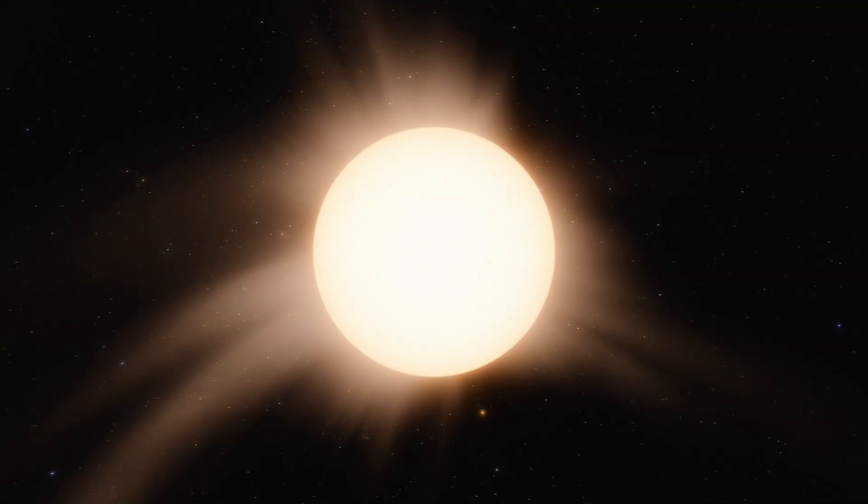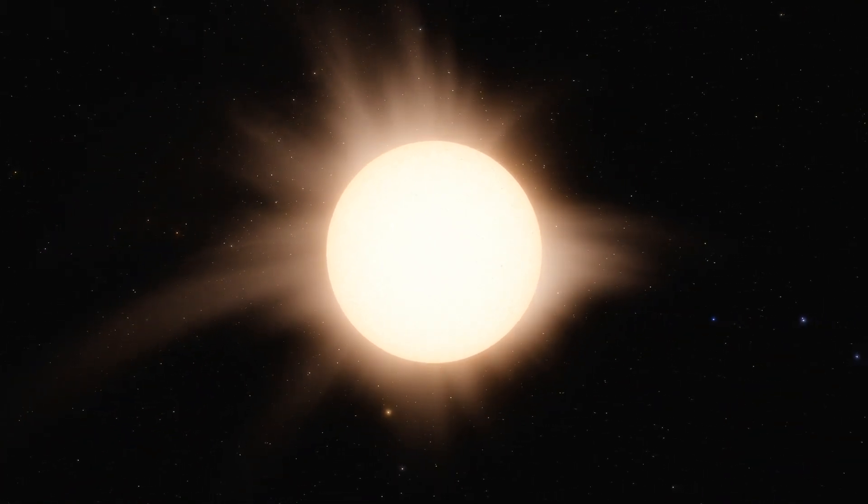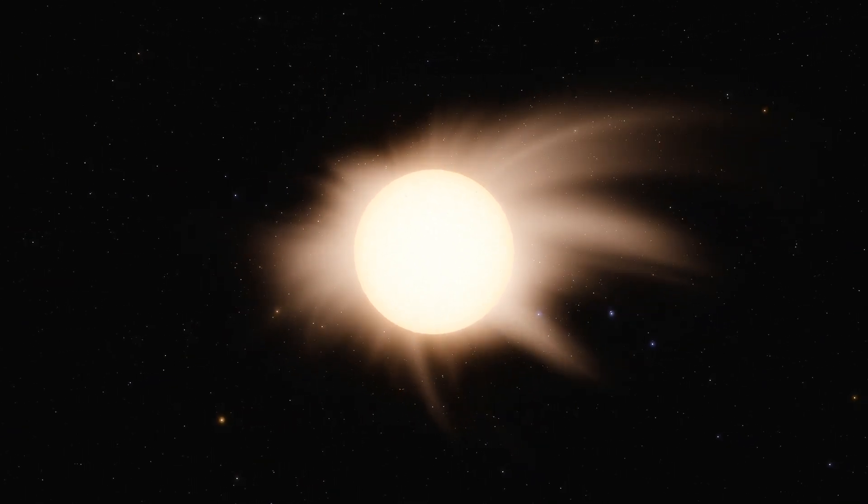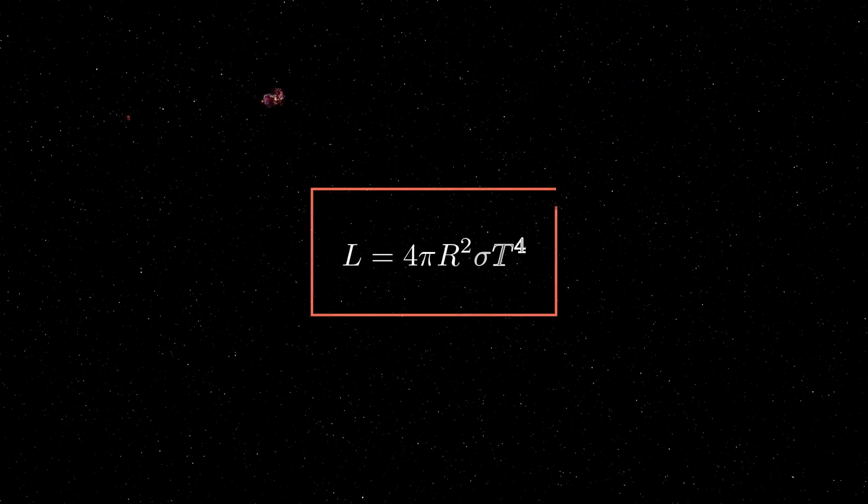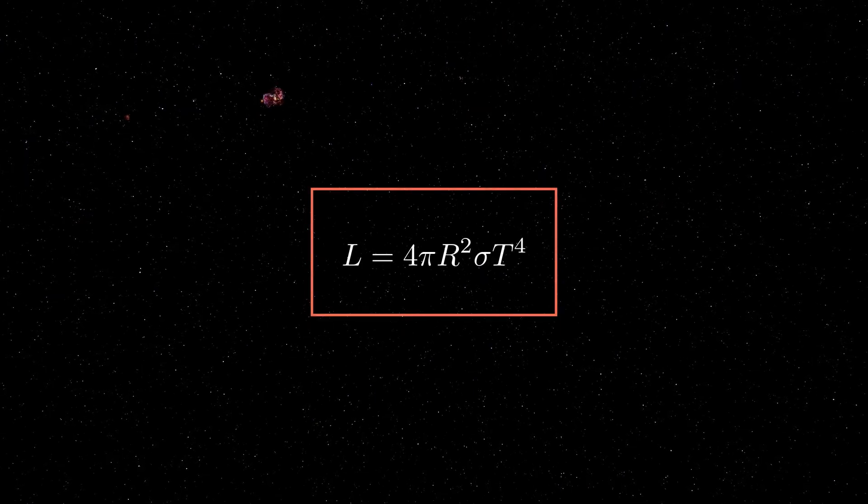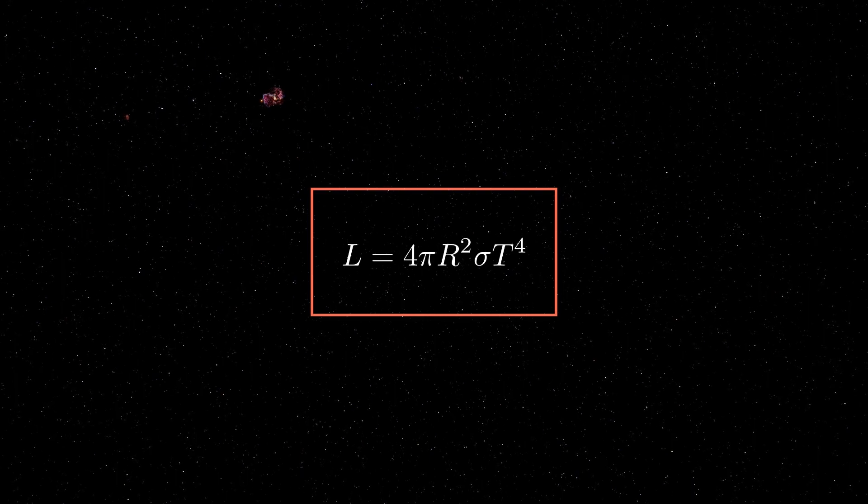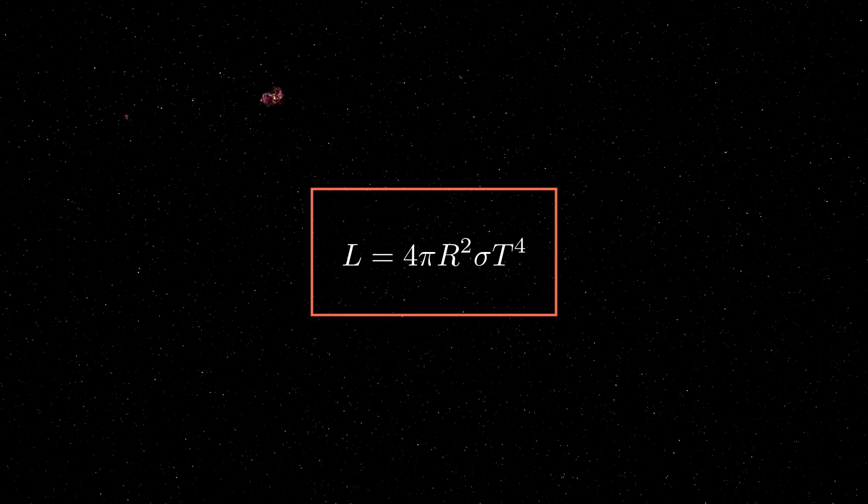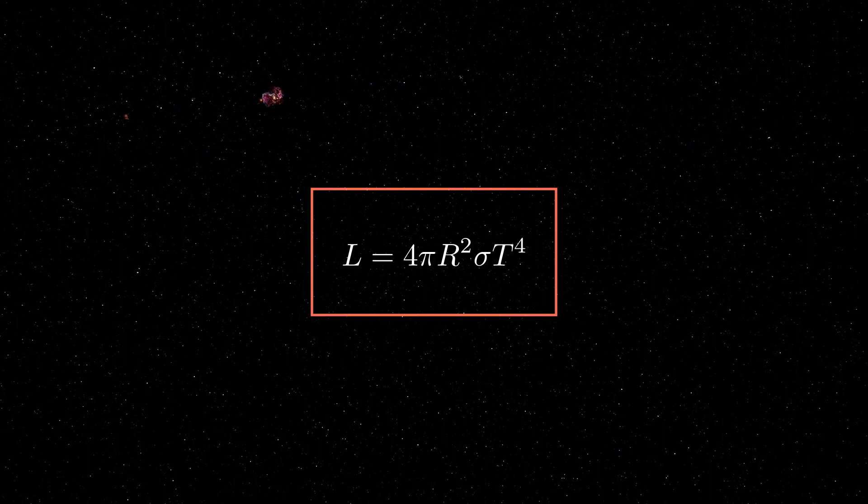The above parameters are determined primarily by the mass of the star. They are also affected by other properties, but to a much lesser extent than the mass. So if we consider a star to be a black body, then its luminosity L is proportional to the square of the radius r and the fourth power of the effective temperature T according to the Stefan-Boltzmann law, where sigma is the Stefan-Boltzmann constant.